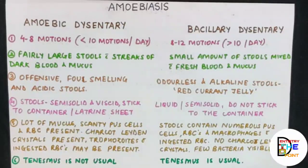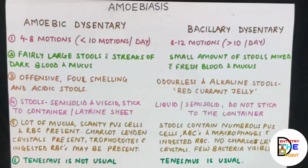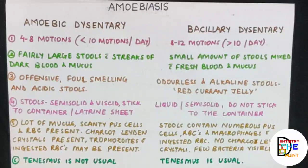In amoebic dysentery, stools are offensive, foul-smelling, and acidic. In bacillary dysentery, stools are odorless and alkaline, giving a red currant jelly appearance. In amoebic dysentery the stools are semi-solid and viscid, sticking to the container or latrine sheets. In bacillary dysentery the stools range from semi-solid to liquid and do not stick to the containers.